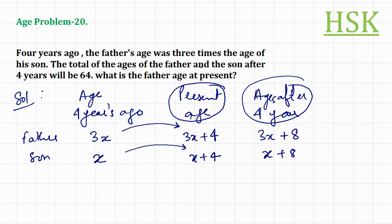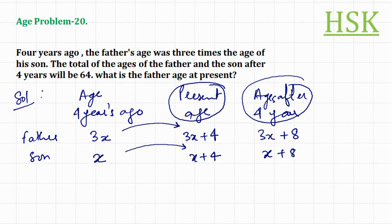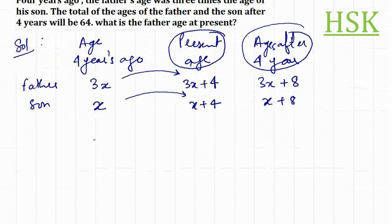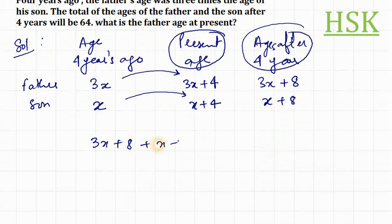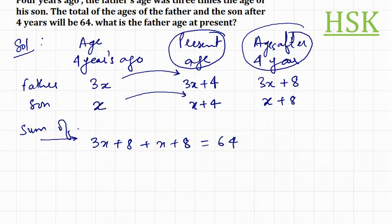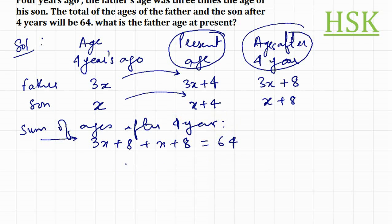The question is: the total of the ages of father and son after four years will be 64. What is the present age of the father? So 3x plus 8 plus x plus 8 is equal to 64. The sum of ages after four years is given to us as 64.